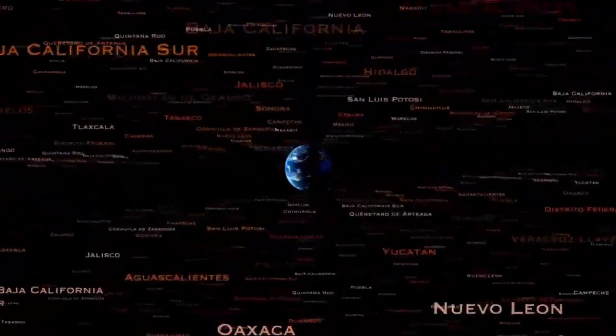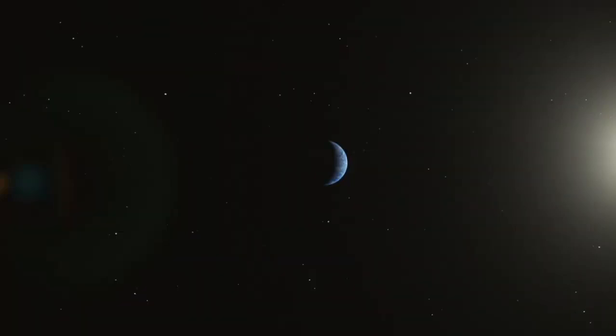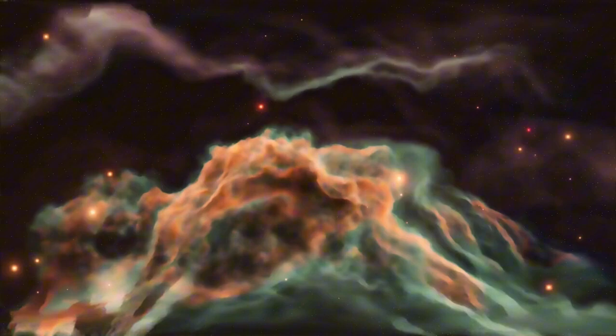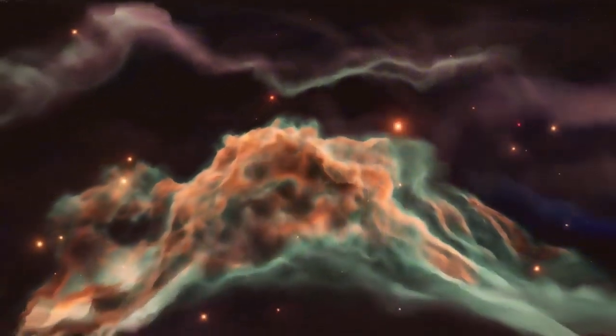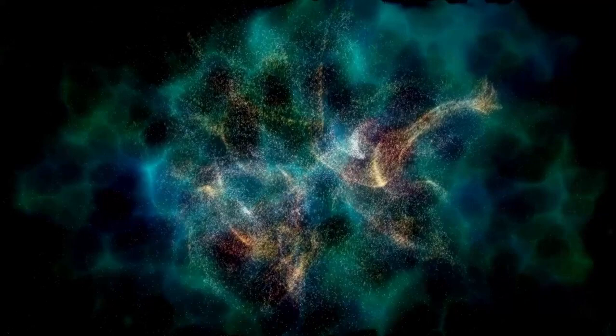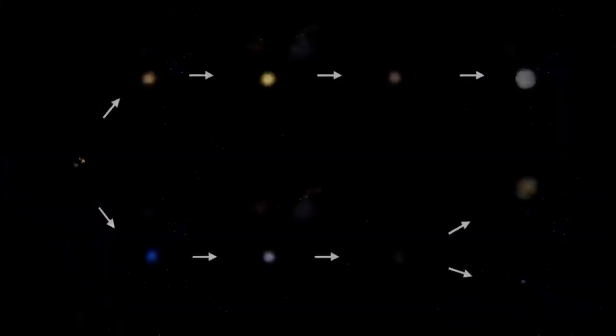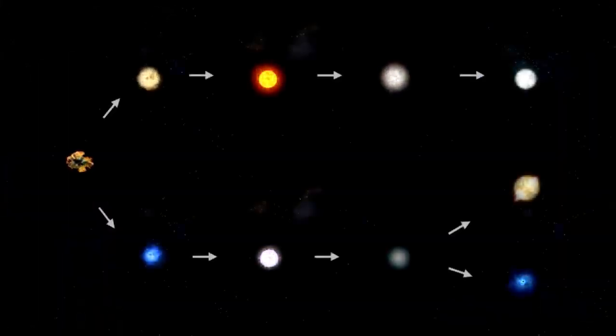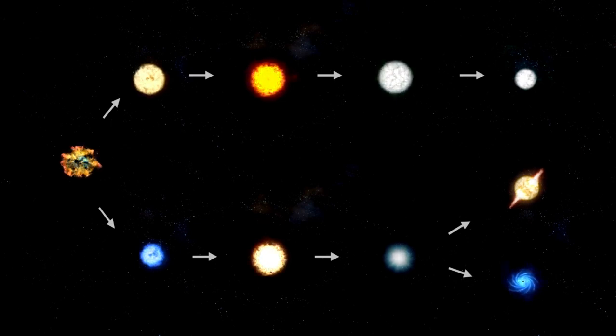This got scientists thinking up different ideas. Some said maybe a huge flow of gas and dust from the star's surface caused this dimming. They pictured the star going through a lot, throwing off its outer parts in a huge show in space. Others thought there might be a very cold area on Betelgeuse's surface. They imagined a spot where temperatures dropped a lot, making the star less bright.